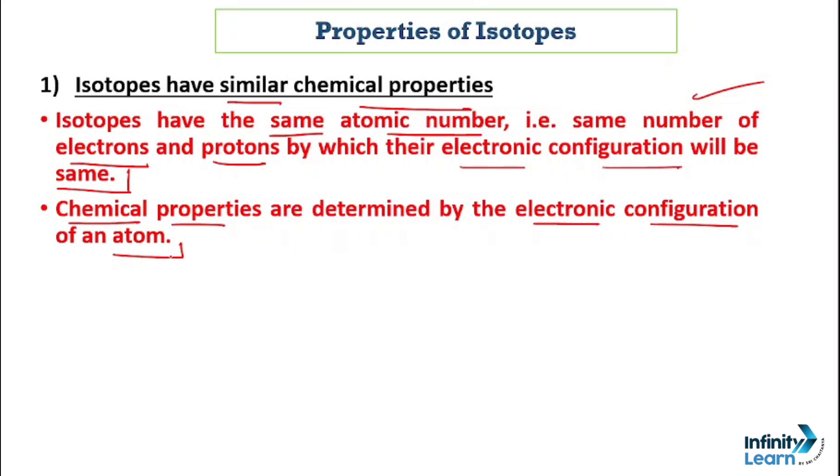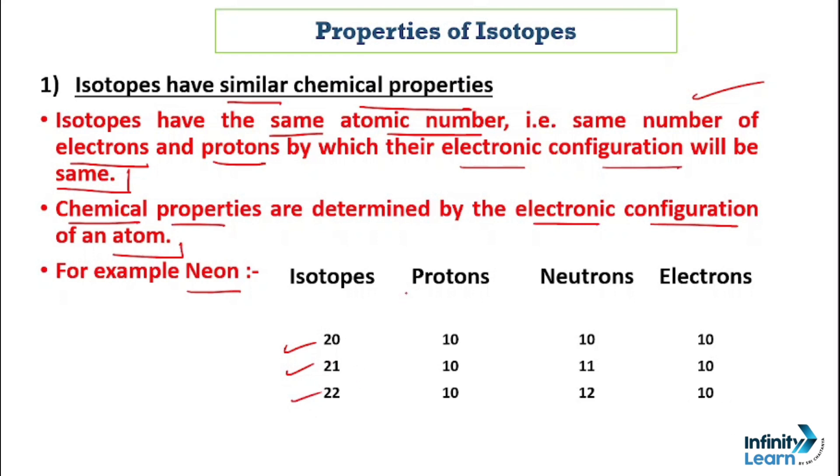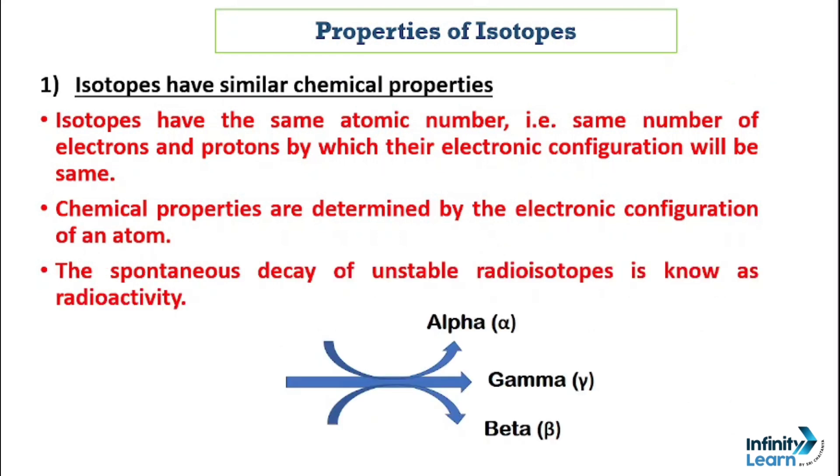Isotopes have similar chemical properties. Isotopes have the same atomic number, meaning the same number of electrons and protons, by which their electronic configuration will be the same. Chemical properties are determined by the electronic configuration of an atom. For example, Neon isotopes are 20, 21, and 22. The protons are the same at 10, neutrons are different, and electrons are the same at 10. The number of protons and electrons is the same, but neutrons differ, which is why chemical properties remain the same because the valency and electronic configuration are the same.